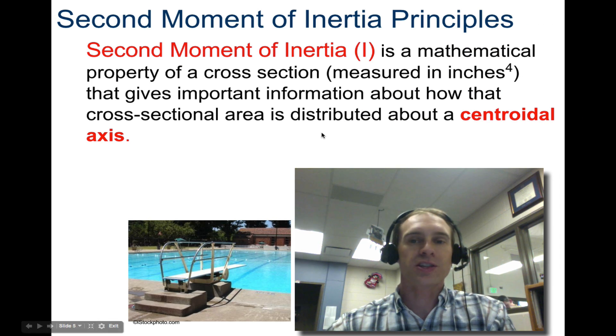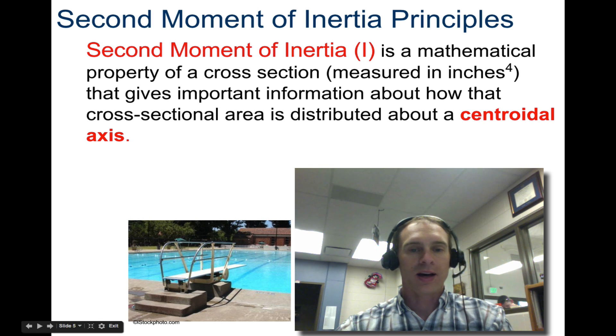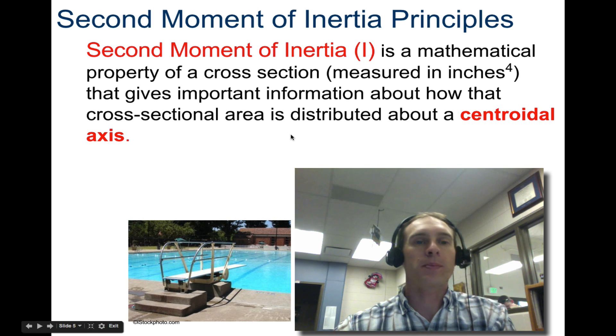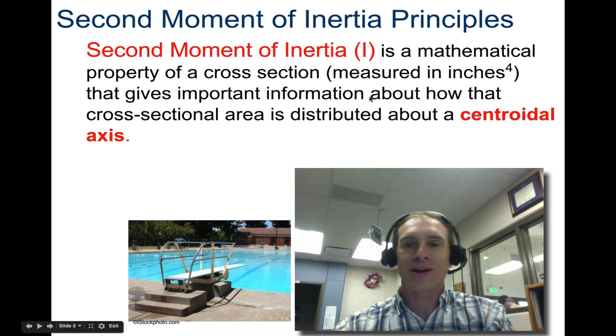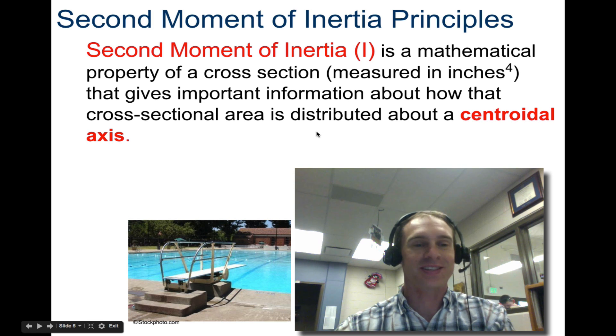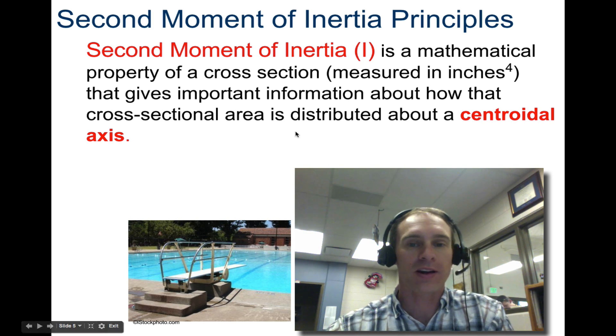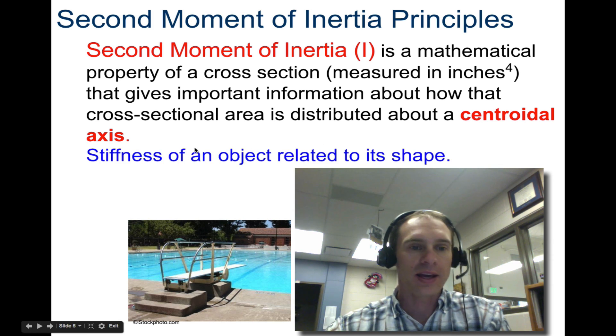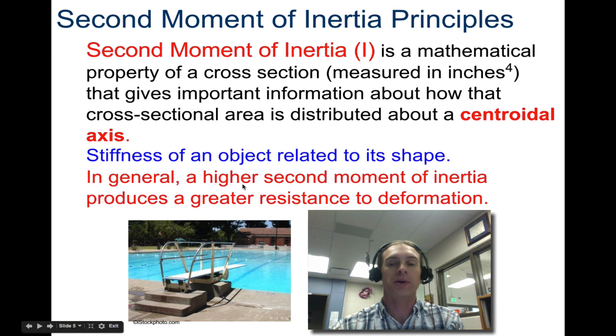The second moment of inertia principle. The second moment of inertia, I, is the mathematical property of a cross-section. It is measured in inches to the fourth, which I'll explain in just a second. It gives important information about how that cross-sectional area is distributed about a centroidal axis. It helps measure the stiffness of an object related to its shape. That's the big idea for a second moment of inertia. In general, a higher second moment of inertia produces a greater resistance to deformation.